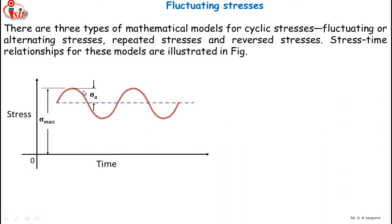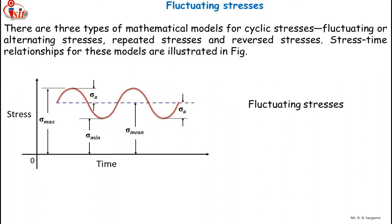The difference between the maximum stress and minimum stress is the stress amplitude, denoted sigma_a. The mean stress, sigma_mean, is the average of sigma_max and sigma_min. This describes the curve for fluctuating stresses.